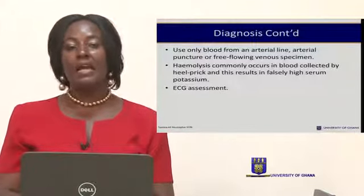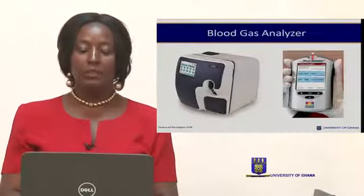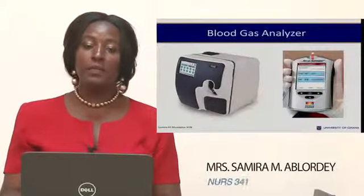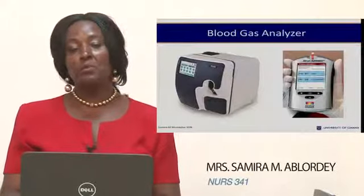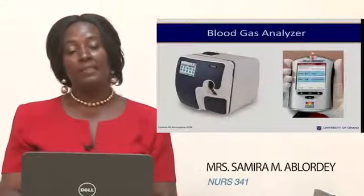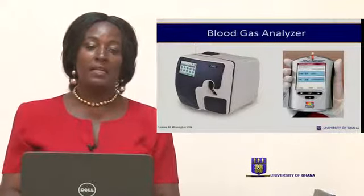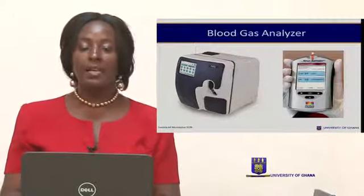The blood gas analyzer is a small portable gadget used to assess blood gas in the unit. However, there are very few available, and those present are normally in the intensive care unit, not in the baby unit or wards. This makes it sometimes difficult to assess potassium levels, but when available, it is very helpful in identifying and treating the condition early.